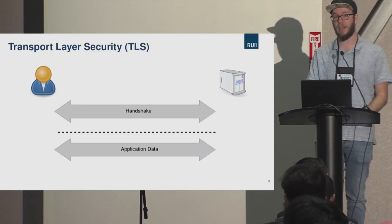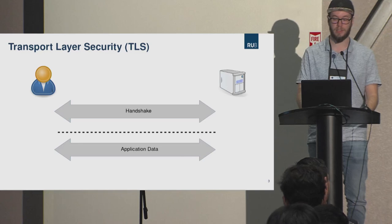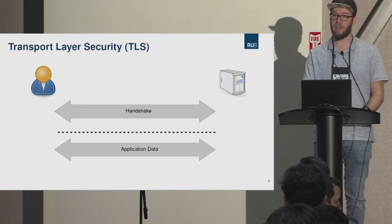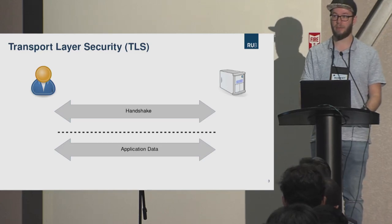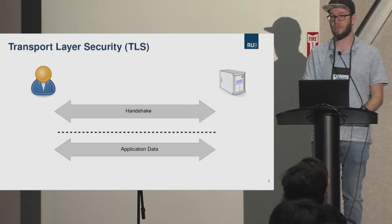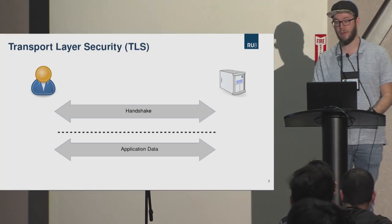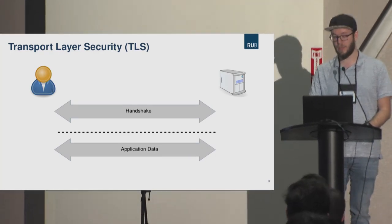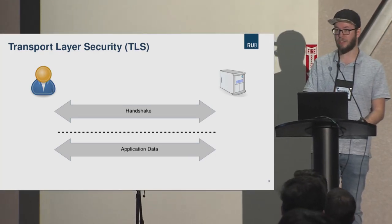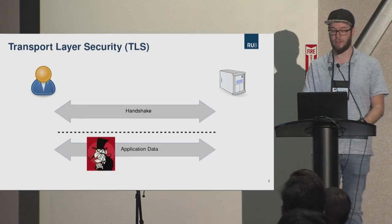In the handshake phase, the cryptographic algorithms and keys are negotiated. Those keys and algorithms are then used in the application data phase to actually encrypt the application data. Today we try to attack the application data so we can steal cookies, for example.